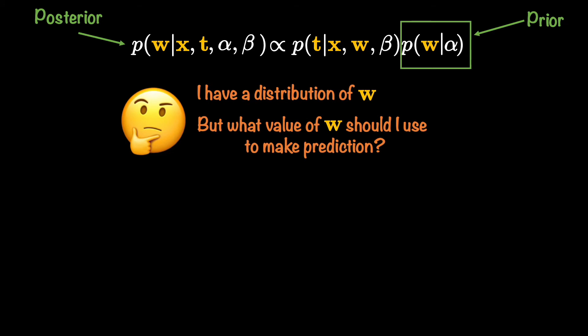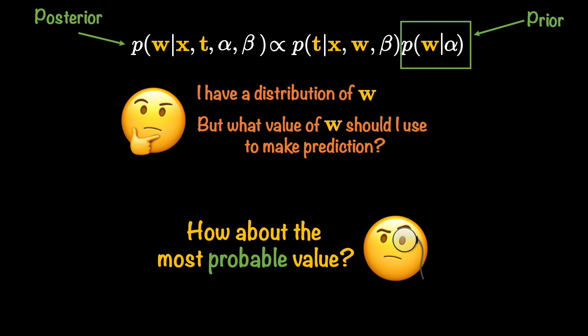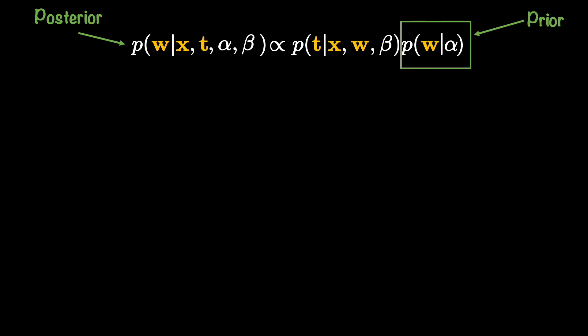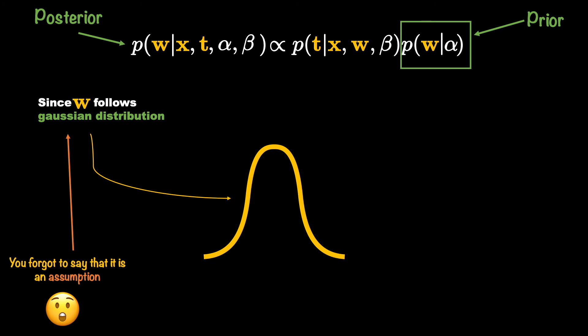And at least for the purpose of this tutorial one answer for this thought is to choose the most probable value, that is the state of w that has the highest probability of happening. So then we ought to find this most probable value. And since weights follow a Gaussian distribution, yes it's an inherited assumption because you see our likelihood is Gaussian and our prior is Gaussian and we know that a product of two Gaussian functions is again a Gaussian function. This is why I am saying that the posterior will be Gaussian.